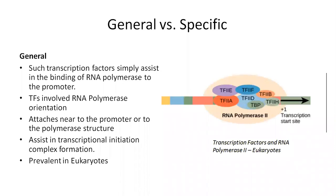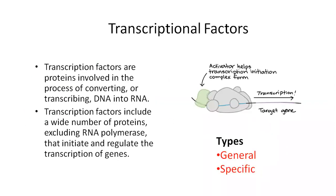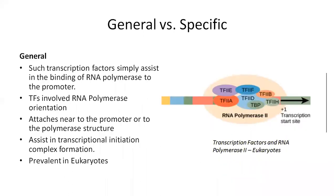There are two types of transcription factors: general versus specific. General transcription factors are proteins that provide RNA polymerase orientation and gene regulation. General transcription factors are attached with RNA polymerase II and provide a sequence so that it follows the correct path; they are attached to the promoter regions.